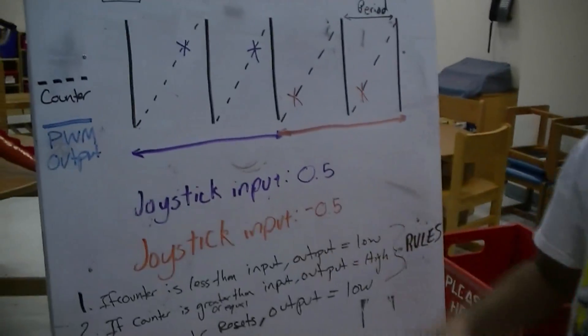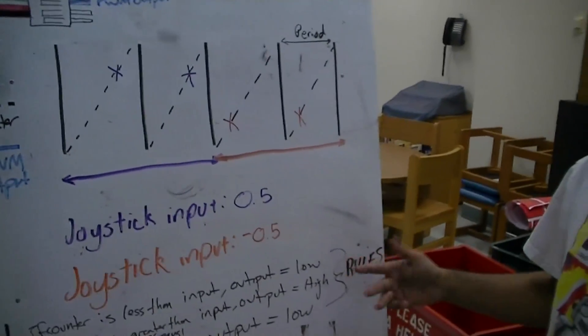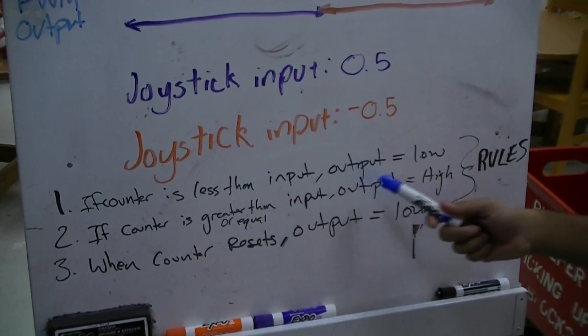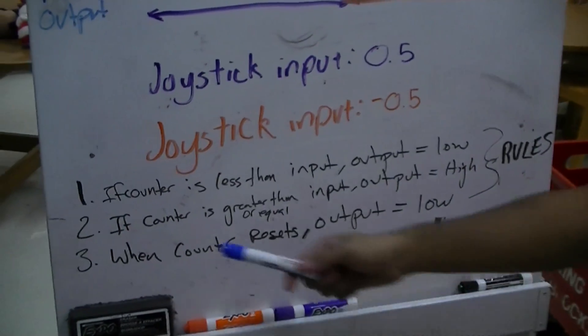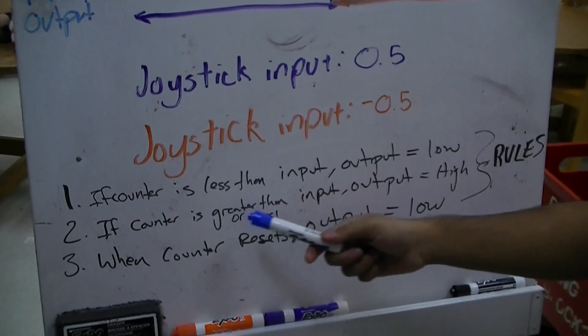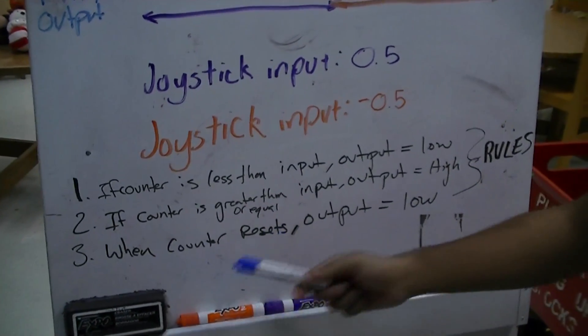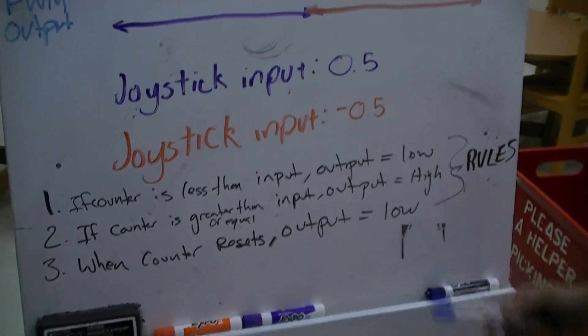And so the PWM output is followed by these three simple rules. If the counter is less than the input, the PWM output will equal low. If the counter is greater than or equal to the input, the output will be high. And when the counter resets, the output will equal low.